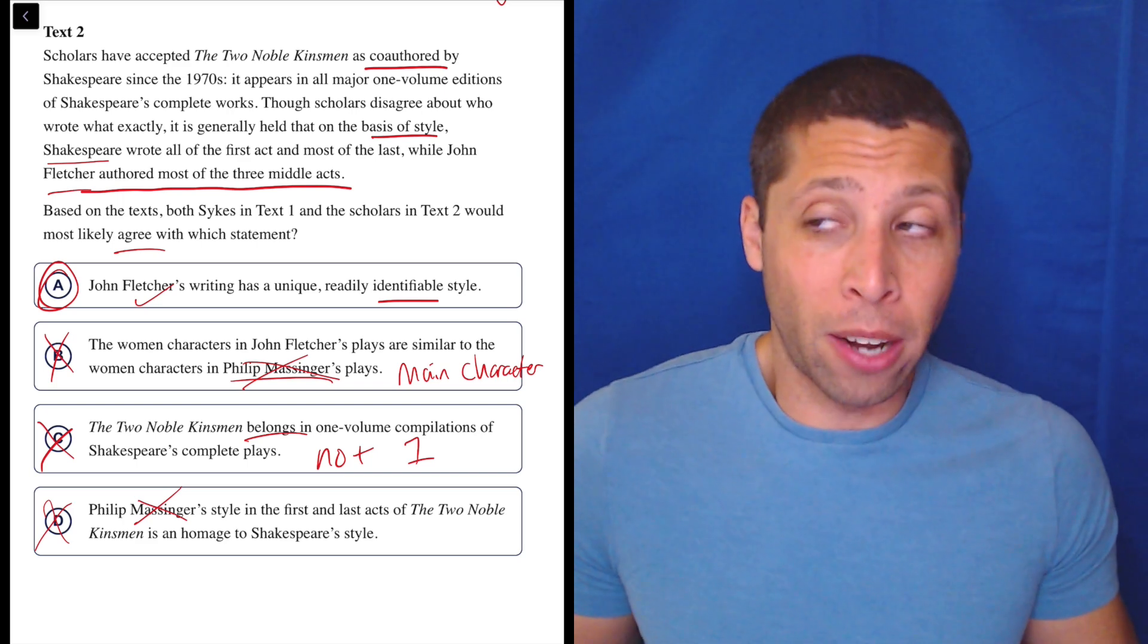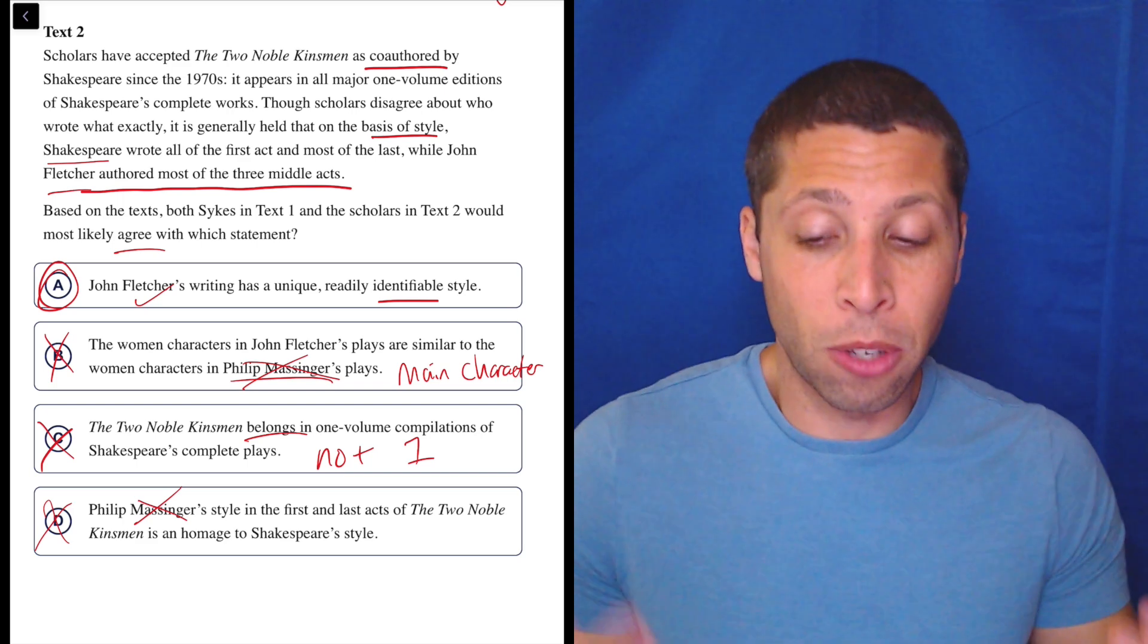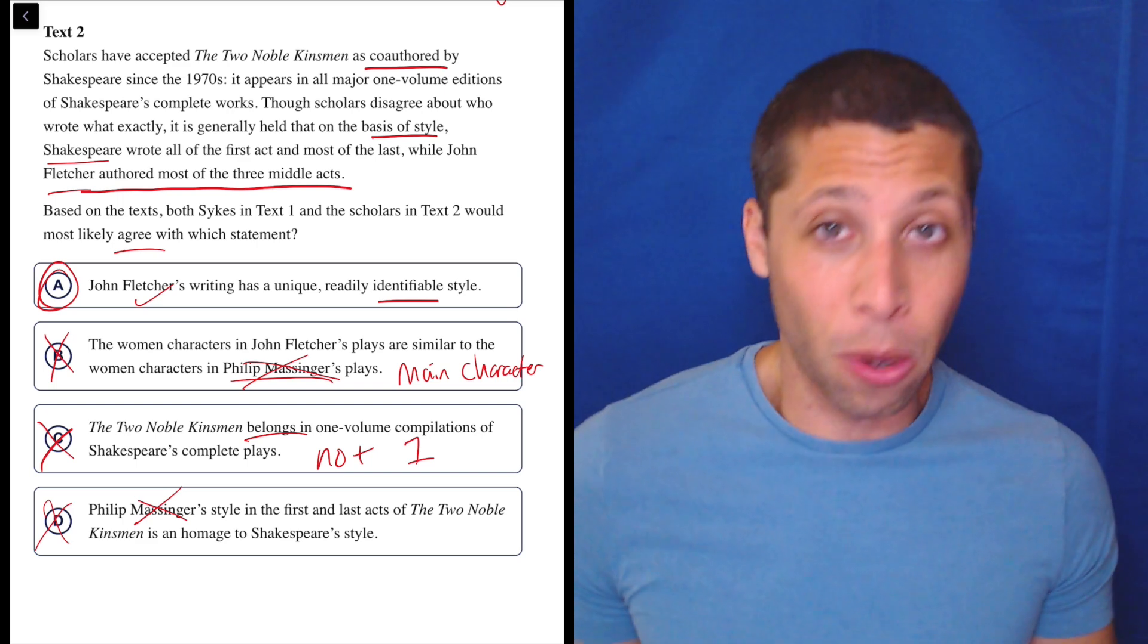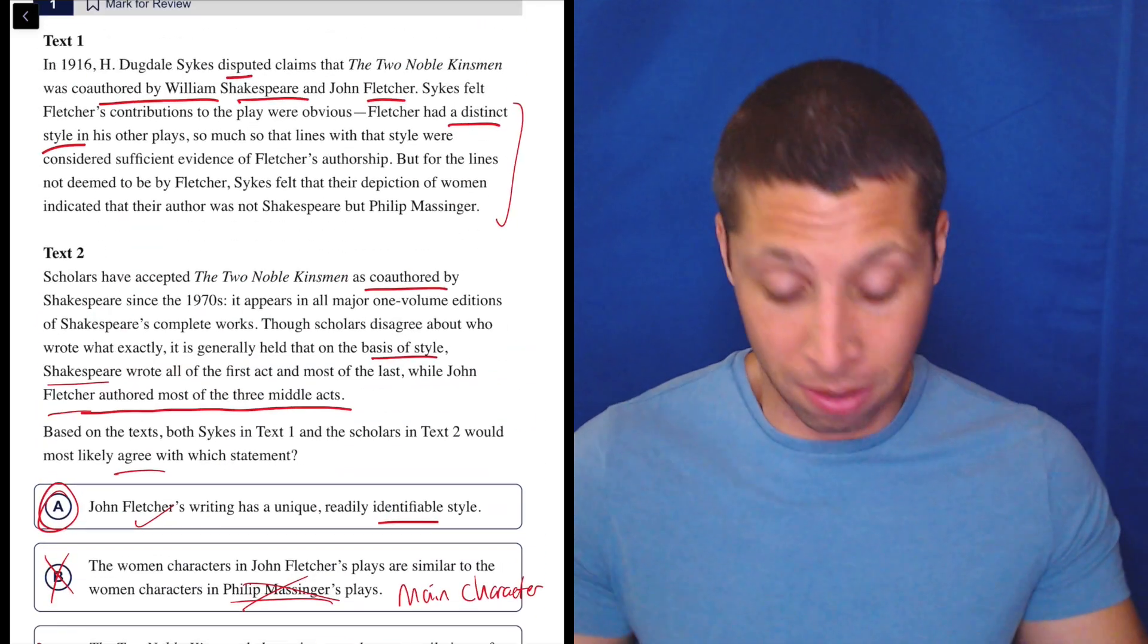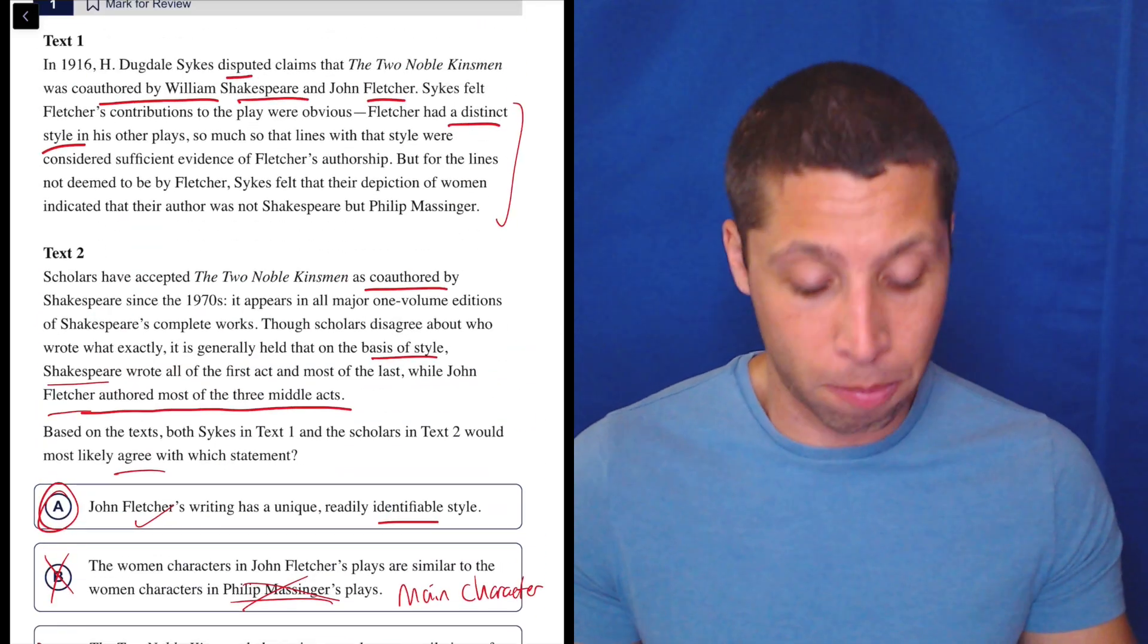So look, in a dumb summary kind of way, both passages seem to talk about Fletcher a lot. That seems okay. They do agree that he has a distinct style, right? So they agree that he's part of this writing or this authorship of this book or play.